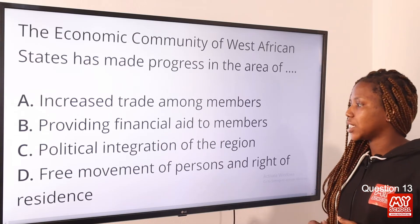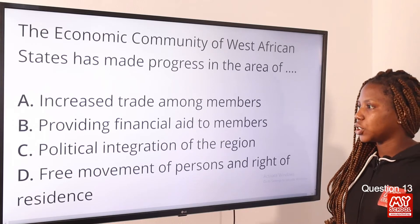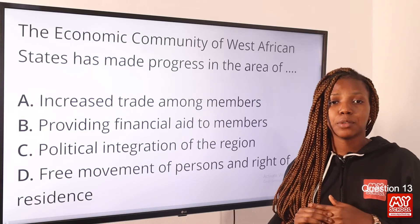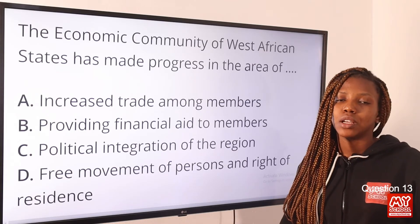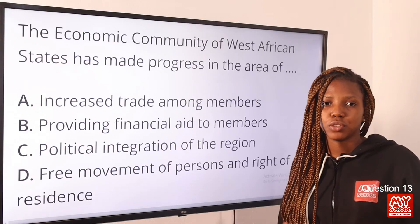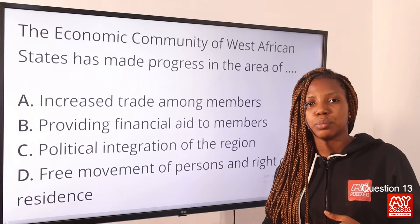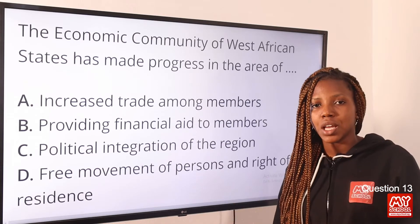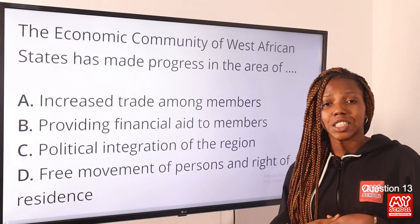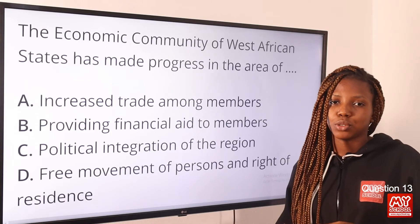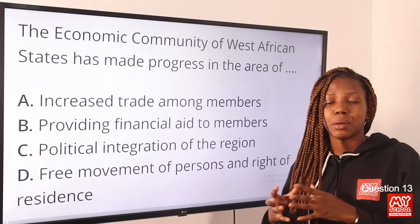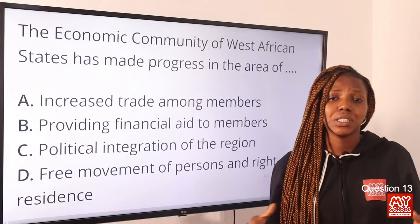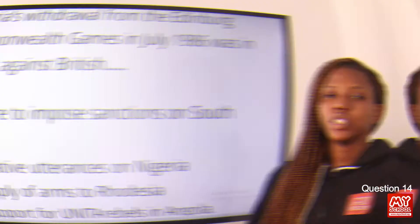Question thirteen: The Economic Community of West African States has made progress in the area of — the answer is option A, increased trade among members. ECOWAS encouraged the production of different goods and products circulated among member states, helping in the growth and expansion of markets of each member state. Option A is the correct answer.